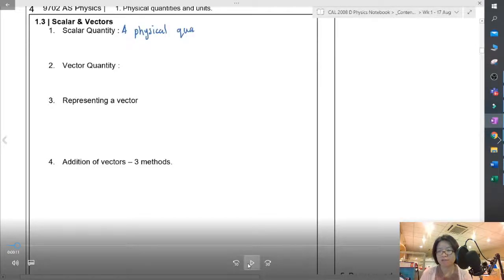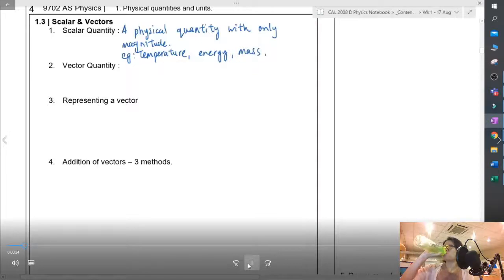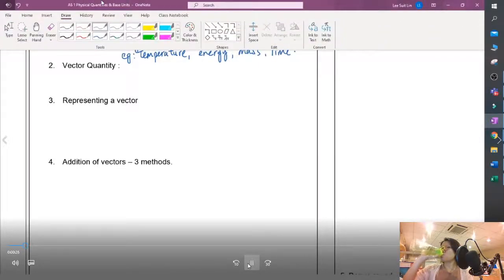We just add them up or minus. For example, if I buy durian and I want to know how much is my total amount of durian, I just add up the mass. I don't really care about the direction of the durian, so to speak. Which is why scalar quantity is a physical quantity with only magnitude and no direction. The examples are temperature, energy, mass and time.